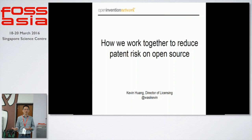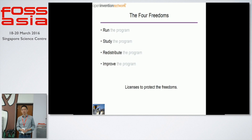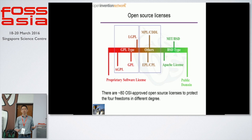Yesterday we heard about the four freedoms to use open source: to run, to study, to redistribute, and to improve. But how and who protects that freedom? That's the license. So a license protects the four freedoms. There are about 80 different OSI-approved licenses, and they protect our freedom in very different ways.